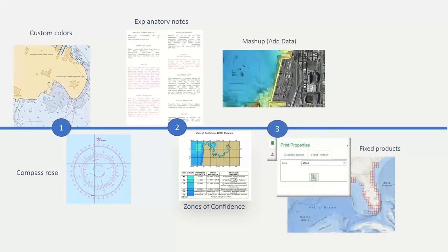After that, we added mashup capability — the ability to add data. You can add any services or other data you want to your electronic chart data and turn on and off specific layers in the electronic chart data to use other information instead. This gets into almost the feel of what S100 is going to look like as you mash up bathymetric data with traditional electronic chart data.